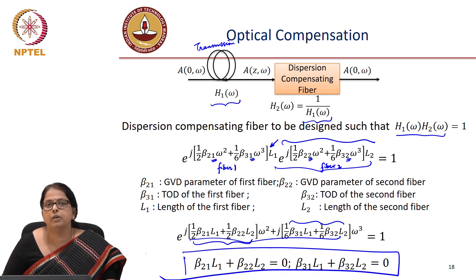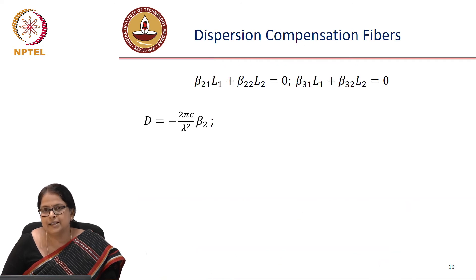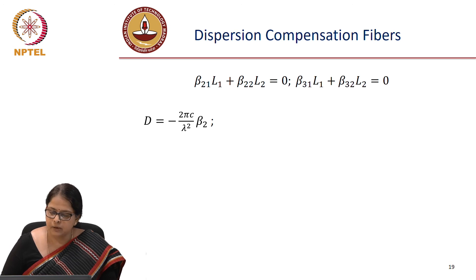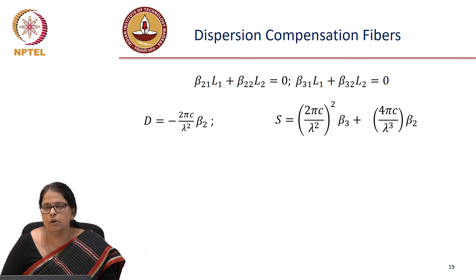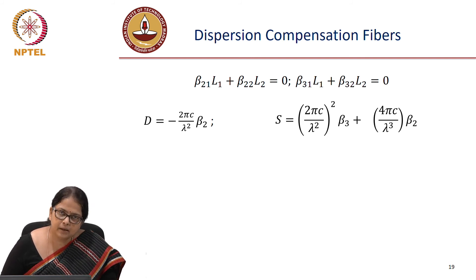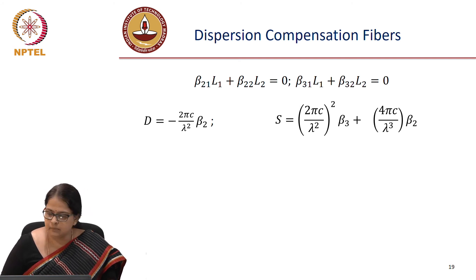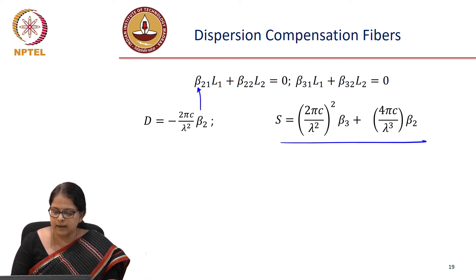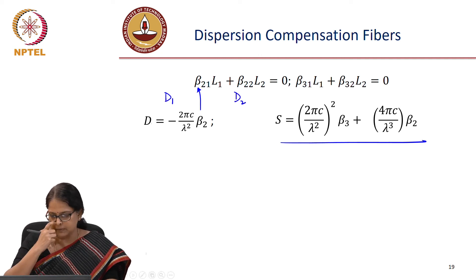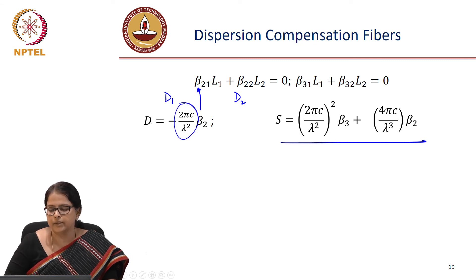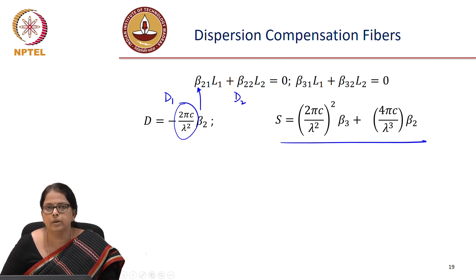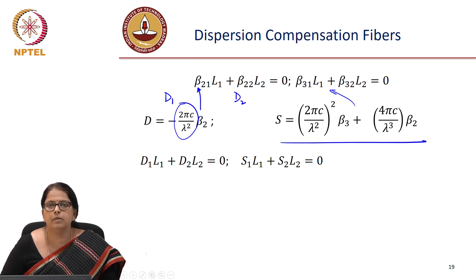We now have the condition for a dispersion compensating fiber. It is easier to write this in terms of the dispersion parameter D because that is what appears in data sheets. We know the conversion relation between beta 2 and D, and also between beta 3 and the dispersion slope S — these were derived in the earlier module. Substituting beta 2 as lambda squared times D divided by 2 pi c, and similarly for beta 2 2, the condition simplifies to d1 L1 plus d2 L2 equal to 0.